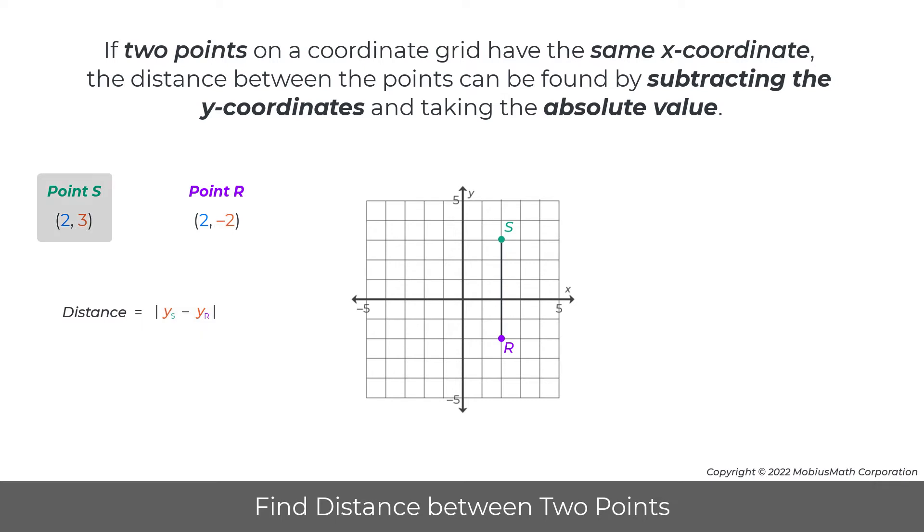For example, points S and R both have the same x-coordinate of 2. So, 3 minus -2 equals 5. Then, taking the absolute value results in a distance of 5 units between the two points.